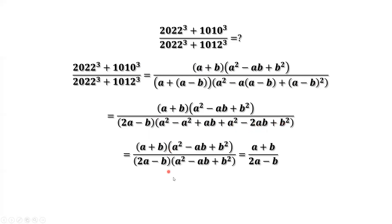So here, we have A squared minus AB plus B squared. Now find the common factor from both the numerator and the denominator. We can cancel this term, cancel this term. Only AB is left from the numerator and 2A minus B for the denominator.